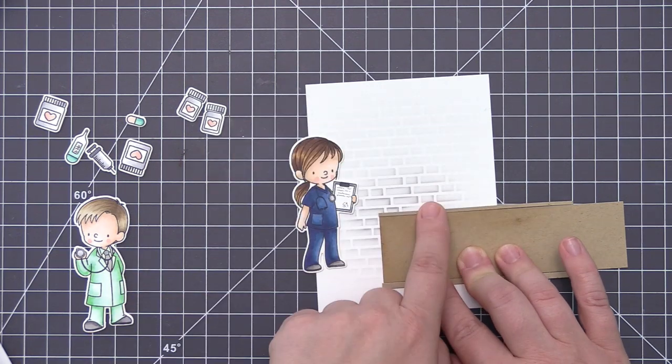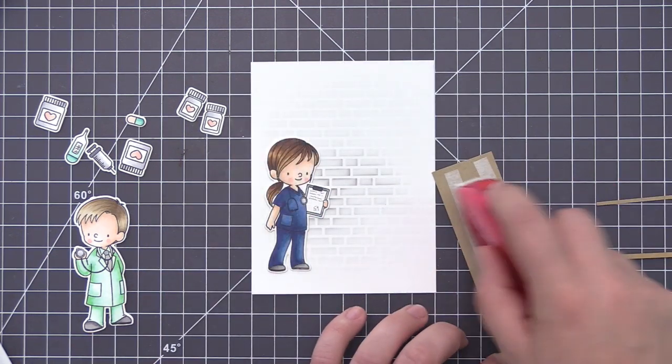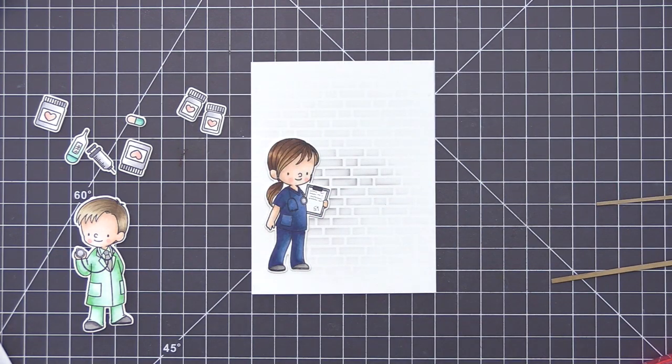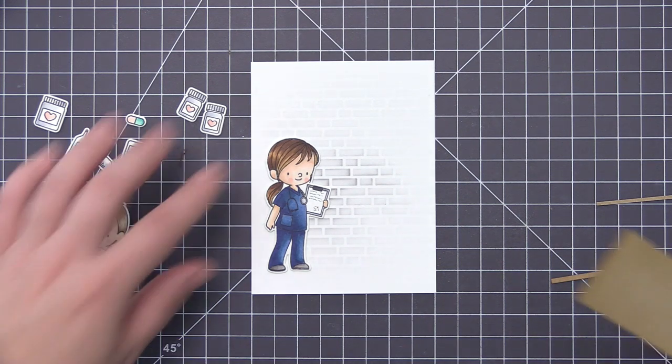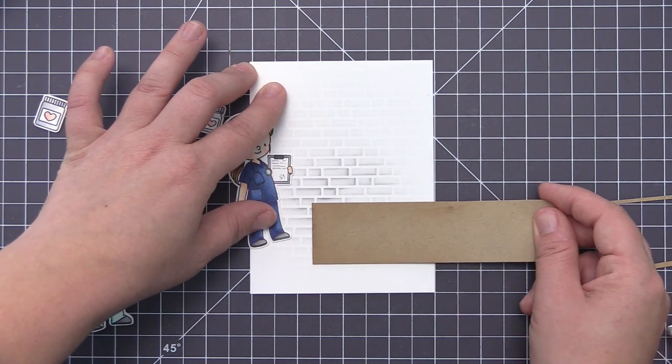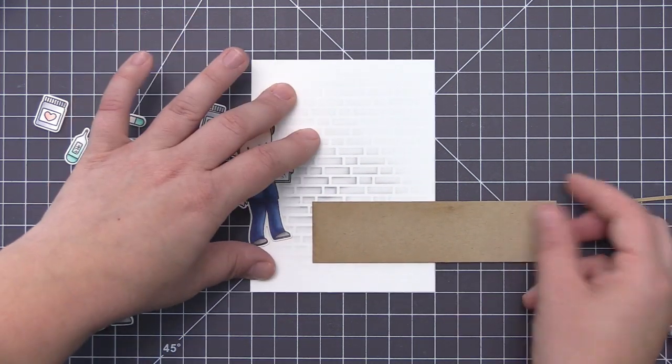This is a very simple design I've created. It's just a rectangle piece of craft cardstock, and I just added it onto the card front, then put a smaller piece at the top and bottom just to try and make it look a little bit more realistic.